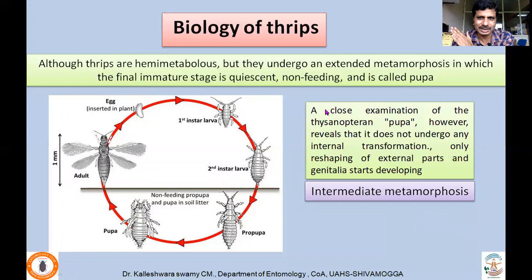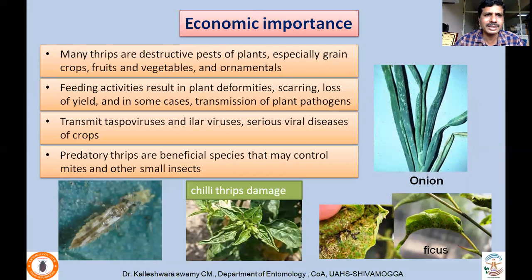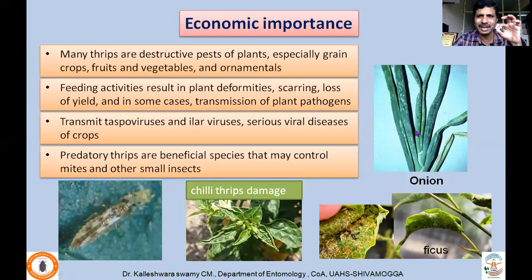We also studied about hypermetamorphosis, wherein each larval instar may undergo a different structure. Coming to economic importance: many thrips are destructive pests of plants, especially grain crops, fruits, vegetables, and ornamentals. In the case of onion and chili, upward curling of leaves is a characteristic damage symptom. Wherever they lacerate, whitish patches occur on the leaf surface — a very characteristic damage symptom caused by thrips.